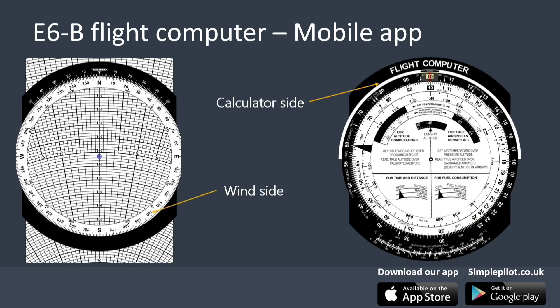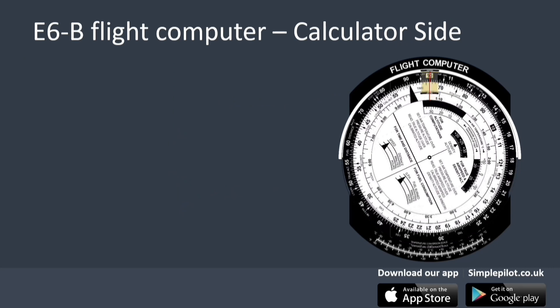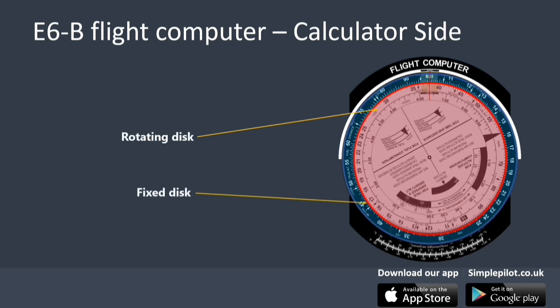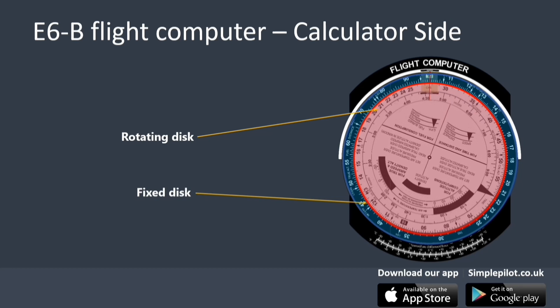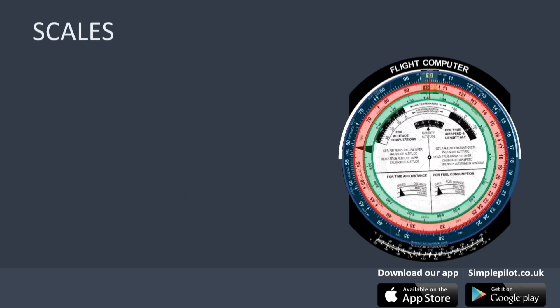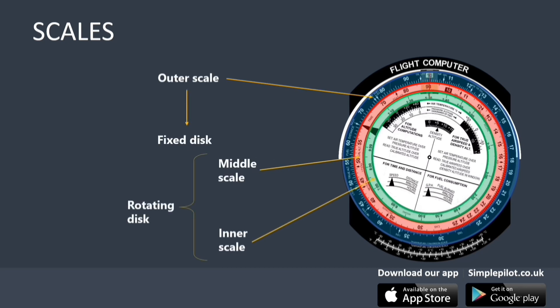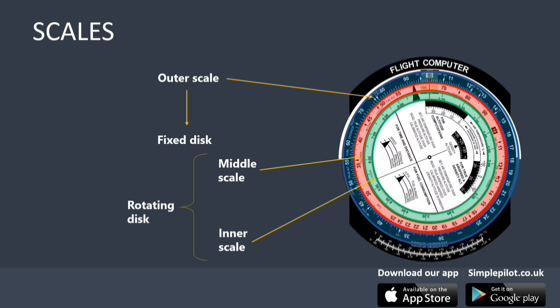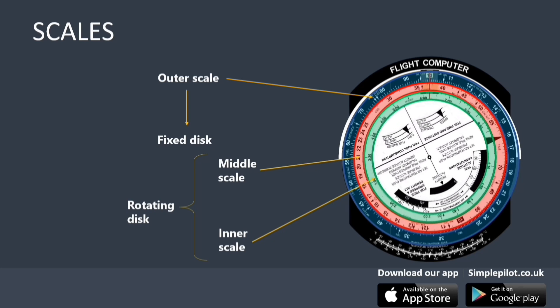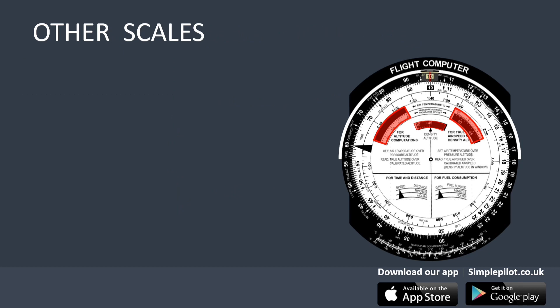This device has two sides: the calculator side and the wind side. The first one is used to perform most calculation problems, while the other is used exclusively for wind problems. Let's look at the calculator side first. The calculator side consists of a rotating disc and a fixed disc at the bottom. We can also find three main scales used to make different calculations. The outer scale is on the fixed disc, while the middle and inner scales are on the rotating disc. Apart from these, there are another three internal scales or windows inside the rotating disc that are used for certain operations.